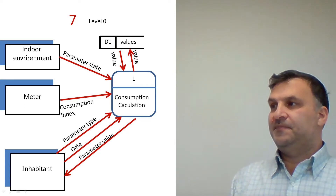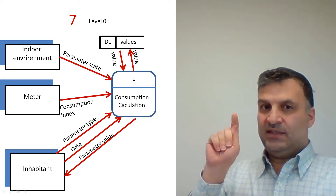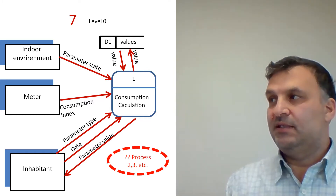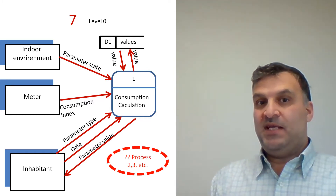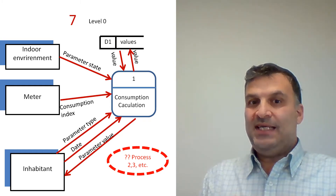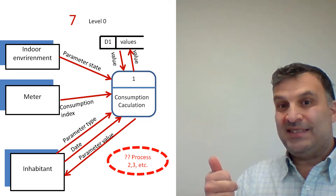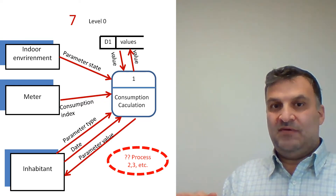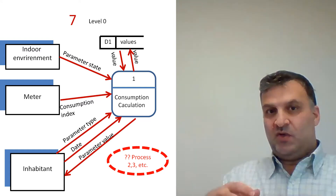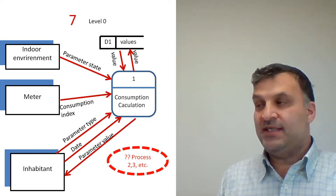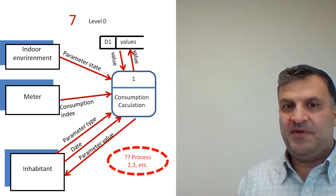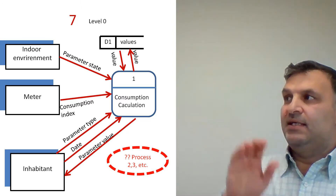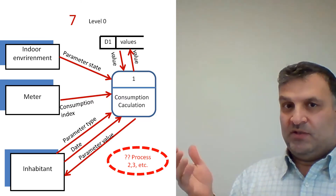What is the mistake here? This is level 0, not the context level. I think you discovered it: at level 0, the system should contain many processes and functions — it is not realistic to have only one. At level 0 we cannot say there is only one operation; the system should be decomposed into many processes. Usually there should be between 3 to 9 processes at level 0. The presence of data stores is not a problem at level 0, and using the number 1 is also not a problem — but having only one process is.